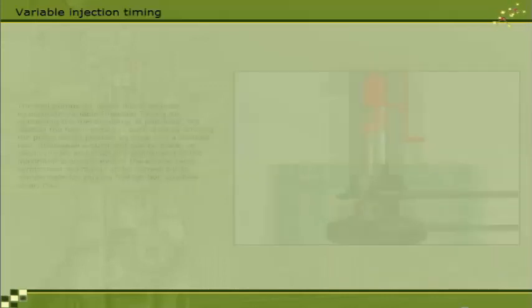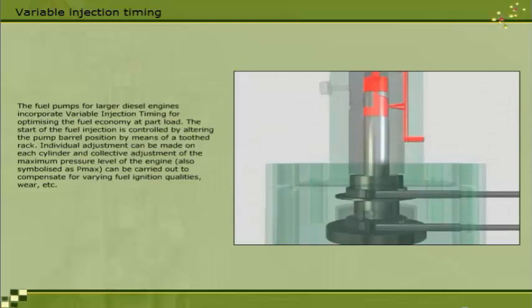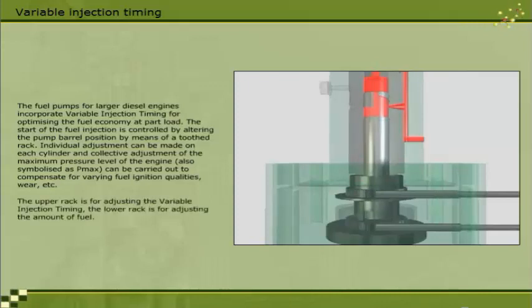The fuel pumps for larger diesel engines incorporate variable injection timing for optimising the fuel economy at part load. The start of the fuel injection is controlled by altering the pump barrel position by means of a toothed rack. Individual adjustment can be made on each cylinder, and collective adjustment of the maximum pressure level of the engine, also symbolised as P max, can be carried out to compensate for varying fuel ignition qualities, wear, etc. The upper rack is for adjusting the variable injection timing. The lower rack is for adjusting the amount of fuel.